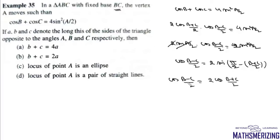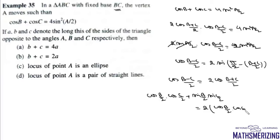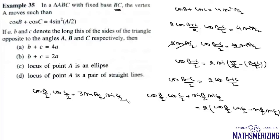Using the expansion cos(A-B) = cosA·cosB + sinA·sinB, we expand both sides. Grouping cosine and sine terms together and simplifying, we find that cot(B/2)·cot(C/2) = 3.